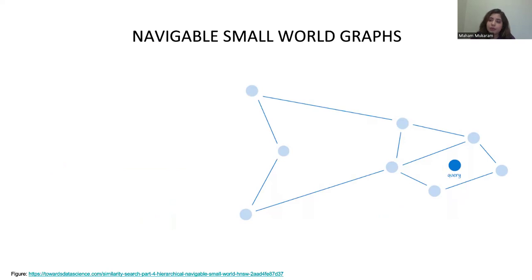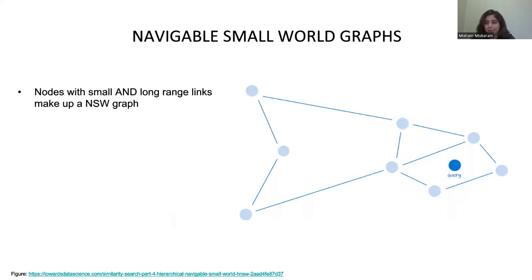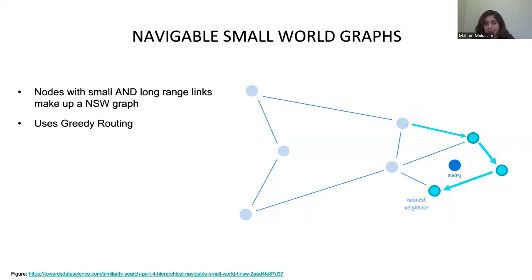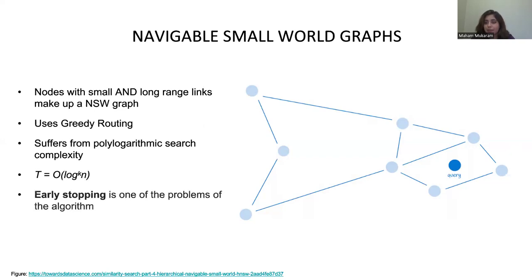Next, let's talk about navigable small world graphs. These are just graphs with long-range links and small-range links. It uses the greedy search algorithm — greedy routing. We have an entry point, search the neighbors, and go to the neighbor that is closest to the query, and keep doing that until we get to the nearest neighbor. However, this suffers from polylogarithmic search complexity because we're searching multiple nodes multiple times. It also suffers from early stopping — for example, if the entry point's neighbors are all farther from the query than the entry point itself, it incorrectly concludes the entry point is the nearest neighbor.